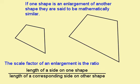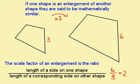For example, if I'm told that this length here is 6 and this length here is 3, then to find the scale factor, I'm going to do 6 divided by 3, which is 2. So I now know that to get from this shape to this shape, I multiply by 2.